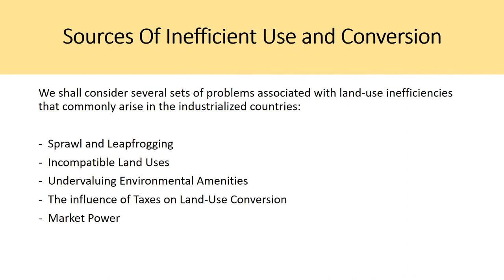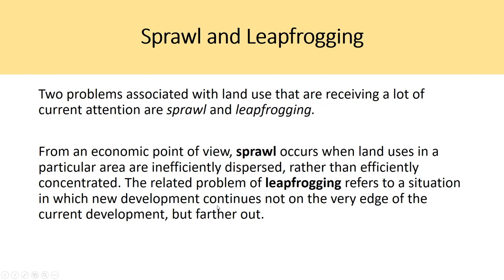What are some sources of inefficiency in use and conversion when it comes to land? We shall consider several sets of problems associated with land use inefficiencies that commonly arise in industrial countries: sprawl and leapfrogging, incompatible land uses, undervaluing environmental amenities, the influence of taxes on land use conversion, and market power. Sprawl and leapfrogging are probably the most important concepts to take away from this video.